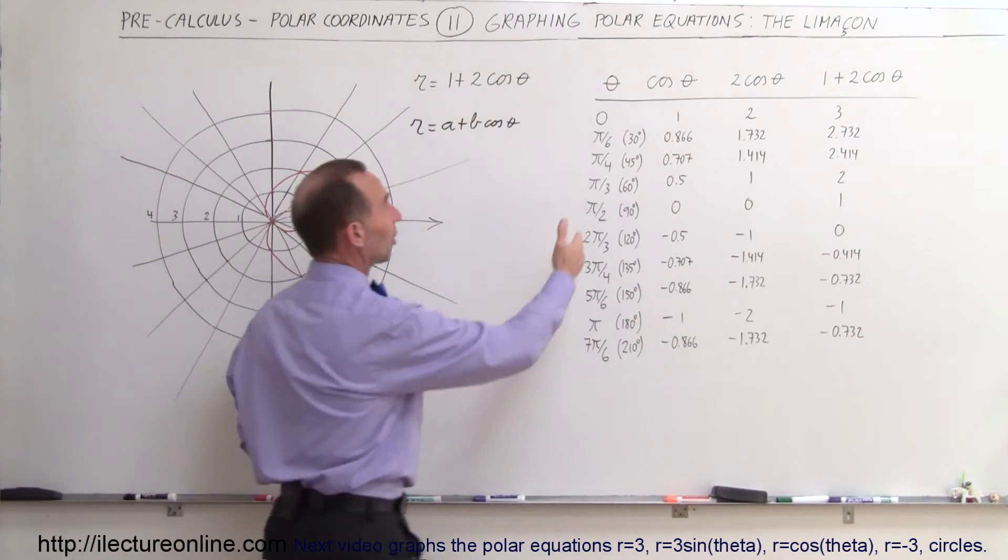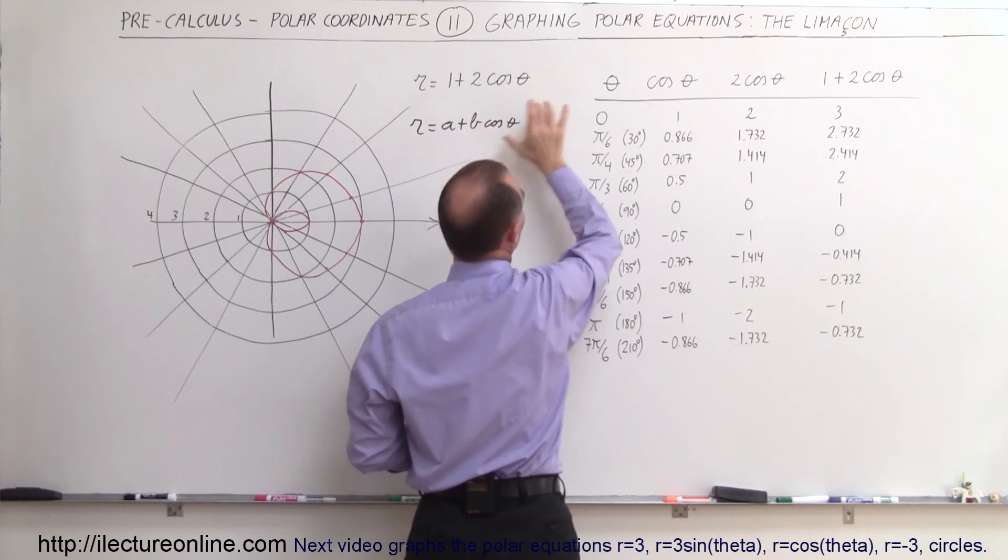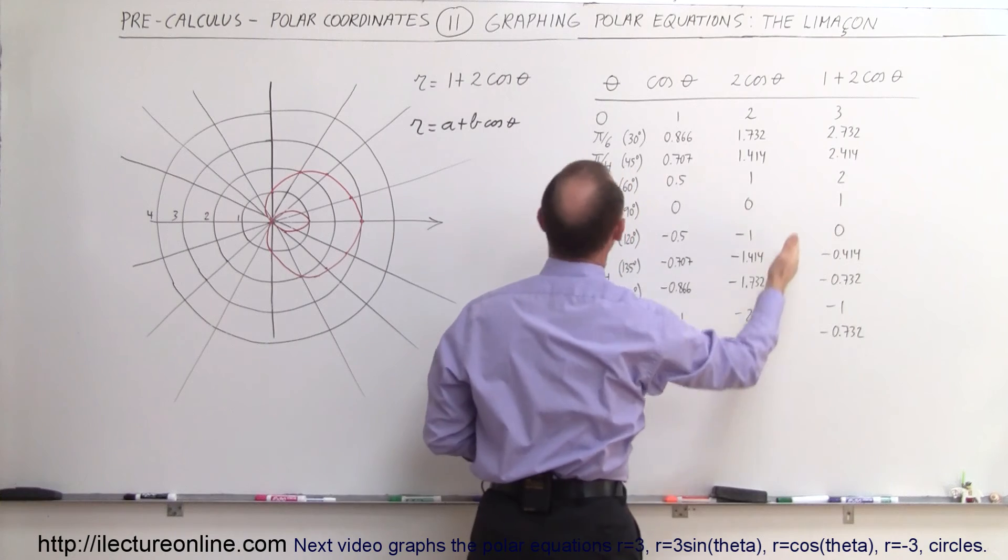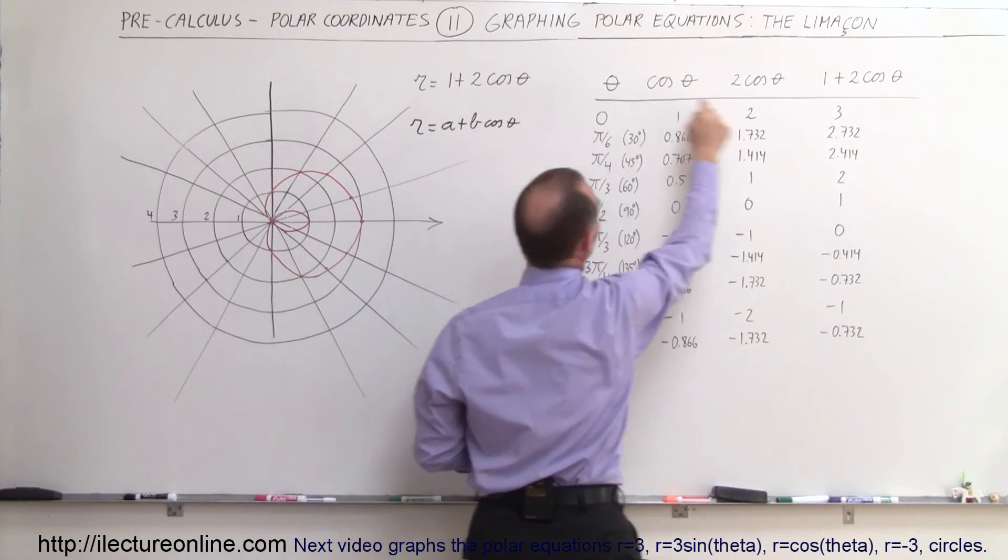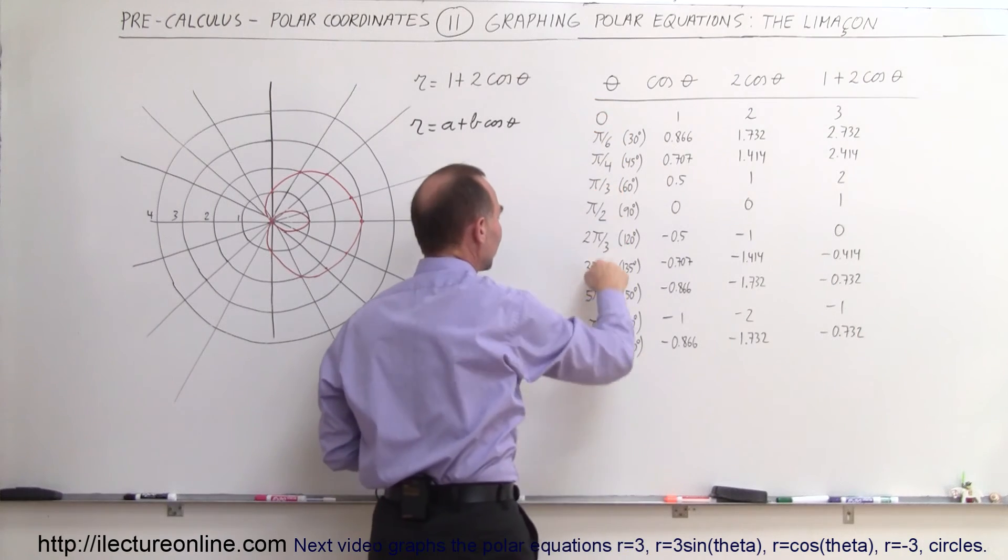Again, all you have to do is simply start with an angle. Then take the sine or cosine function, whatever it may be, of that angle. Then, of course, multiply times 2. We multiply times 2, and then we add 1 to it. So this here equals r.